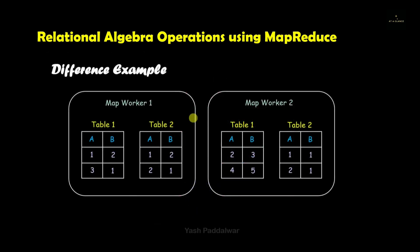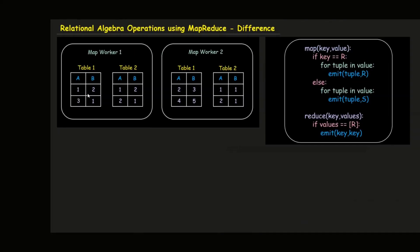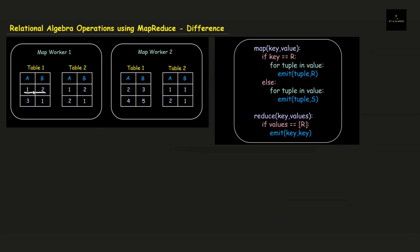If the algorithm is not clear, let's look at an example and solve it step by step. We take two map workers, each containing two tables. Note that originally there are only two tables — table 1 and table 2 — and a section of each is in each map worker. According to the difference operation, the first record 1,2 appears in both tables, so it will be excluded. The second record from table 1 is not in table 2, so it will appear in the final result.